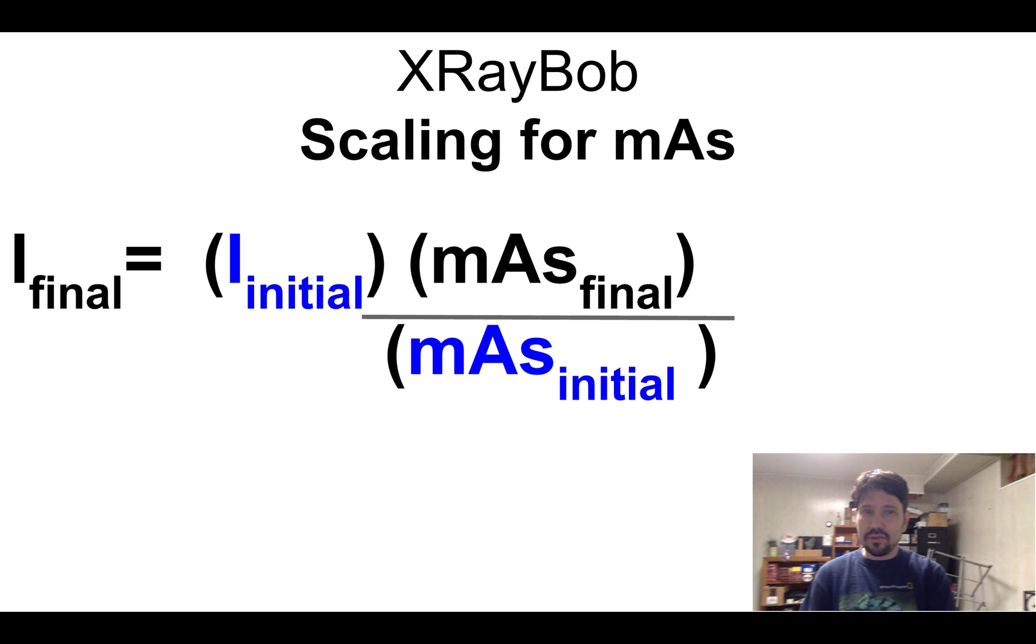The formula I like to use is shown here: intensity final equals intensity initial times the mAs final over mAs initial. So if I double my mAs, I would do the twice as much mAs final over mAs initial, I would double my intensity.